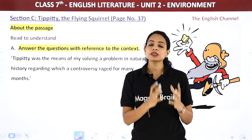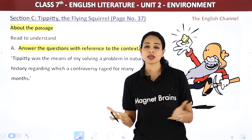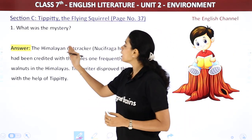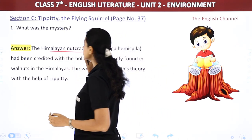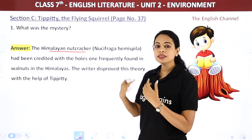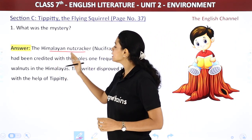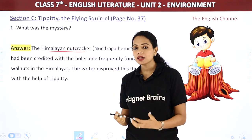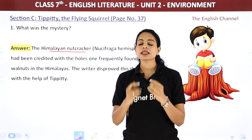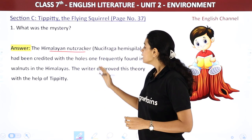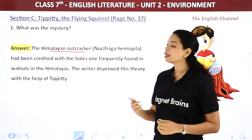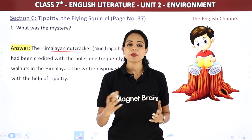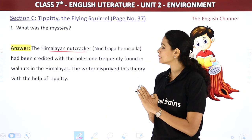The first question: What was the mystery? The Himalayan nutcracker — Nucifraga hemispila, that is its scientific name — had been credited with the holes one frequently found in walnuts in the Himalayas. The birds were blamed for creating holes in the walnuts found in the Himalayas. The writer disproved this theory with the help of Tippity. That is our first answer.